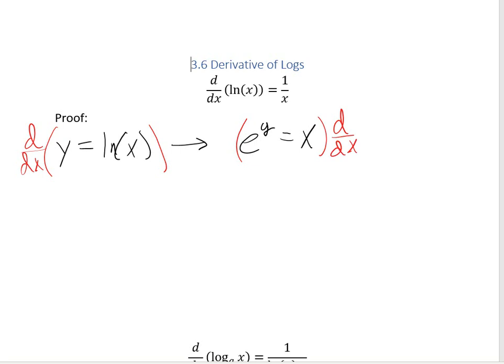Let's go ahead and focus on this right-hand side and find its derivative. The derivative of e to the y would just be e to the y, but remember from the section where we did implicit differentiation, we have to multiply by y prime any time we take the derivative with respect to y. Equals, and then the derivative of x is just 1.